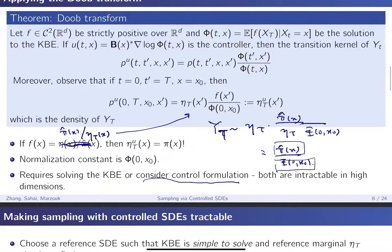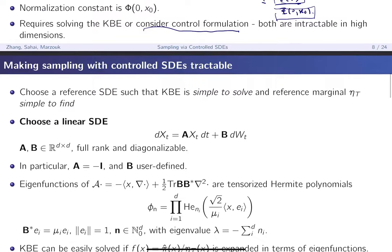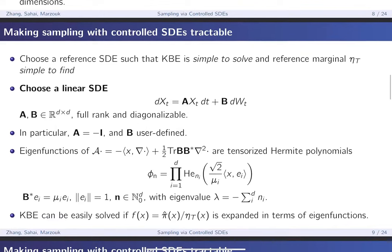Our approach is to figure out a way to make controlled SDEs more tractable. Our goal is just to find a sample from a given target distribution. We have a lot of control in this formulation — we're not fixed to a particular SDE. We're allowed to choose whatever SDE we want. We can choose an SDE such that the Kolmogorov backward equation is simple to solve, and such that the reference marginal ηₜ is also simple to find. In particular, we're going to choose the simplest one other than Brownian motion, which is a linear SDE: A(x) becomes Ax and B(x) becomes a fixed matrix B.